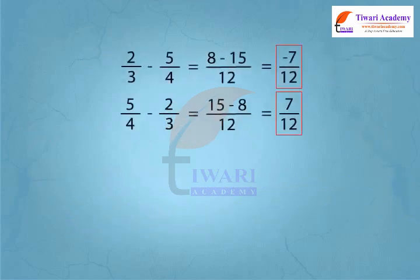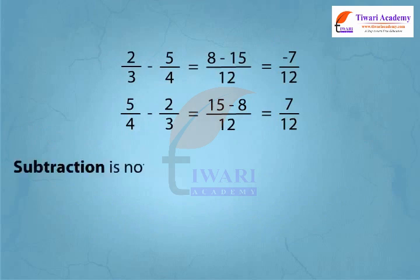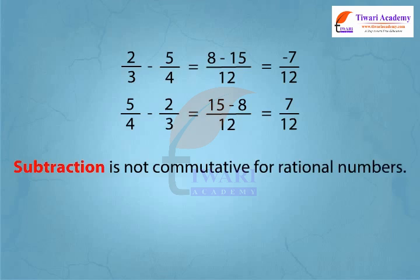If we change the order in subtraction, then we get different answers. Therefore, rational numbers are not commutative under subtraction.